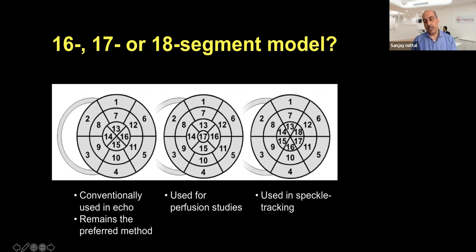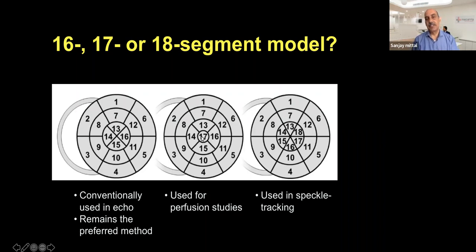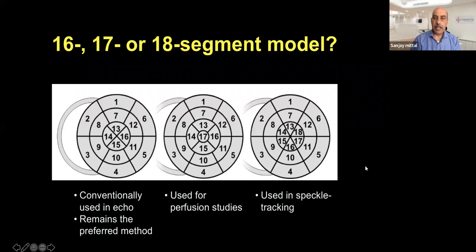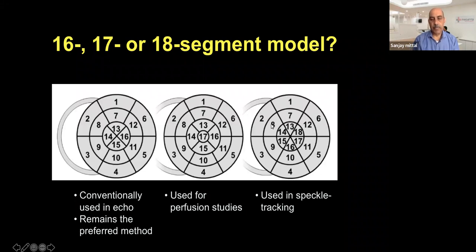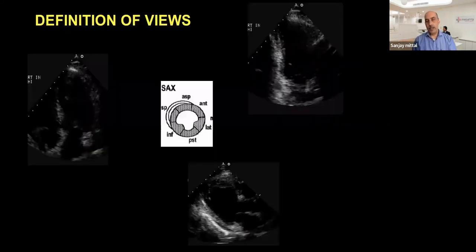The apex has 4 segments because it is supplied by the tip of the LAD. The 17th segment is the tip of the apex. MRI, speckle tracking, CT scan, and thallium studies often divide into 18 segments — six each at base, mid, and apex. But I'm going to focus on the 16 segments which we clinically use in practical echo labs.